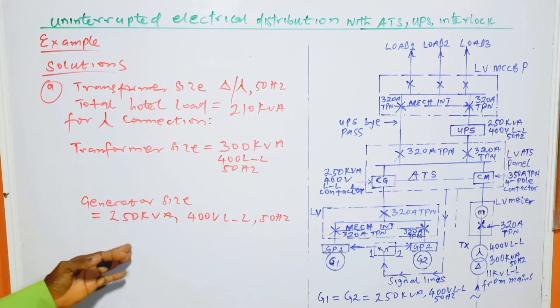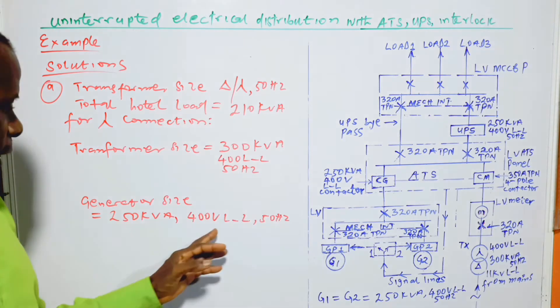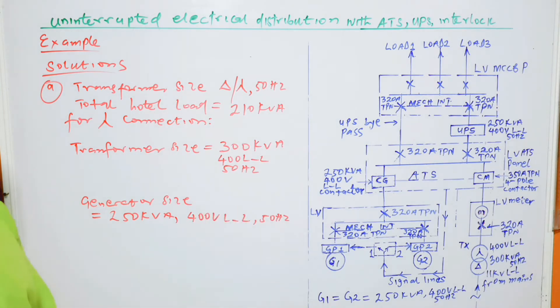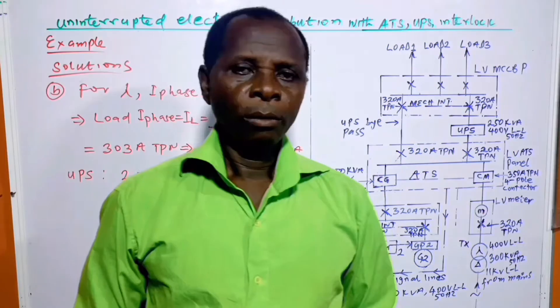So similarly, the generator size is 250kVA, improved generator, 400 volts line to line at 50Hz. Moving on.